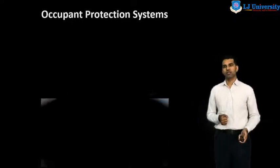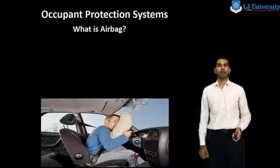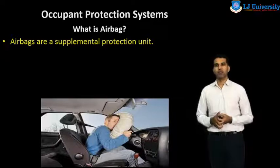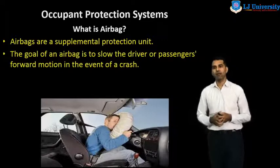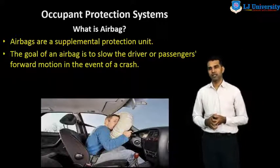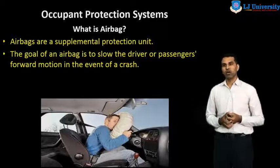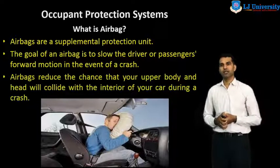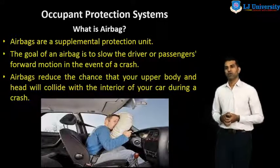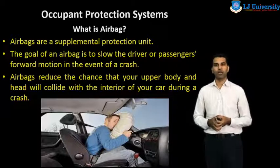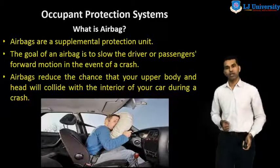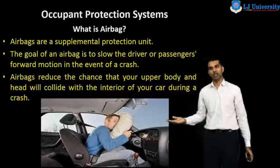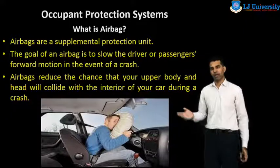The second system of the occupant protection system is the airbag. Airbags are a supplemental protection system. The goal of an airbag is to slow the driver's or passenger's forward motion in the event of a crash. Airbags reduce the chance that your upper body and head will collide with the interior of your car during an accident. At the time of the accident, the airbags open and save the driver.